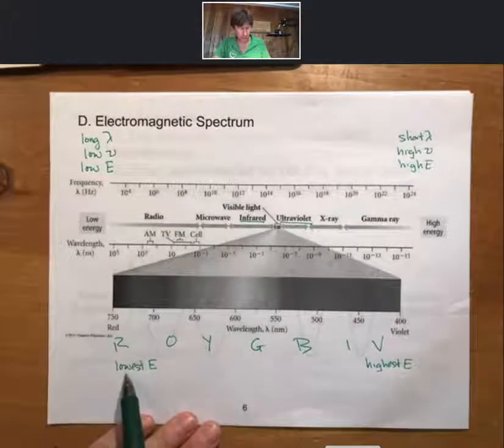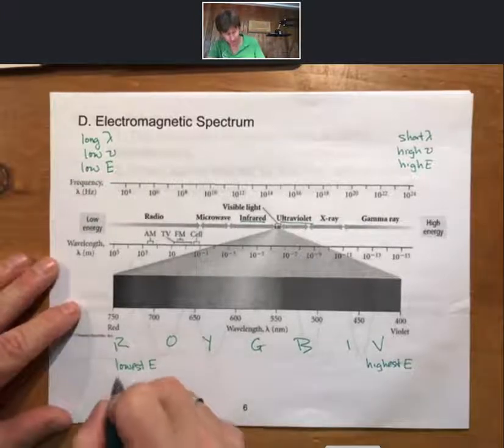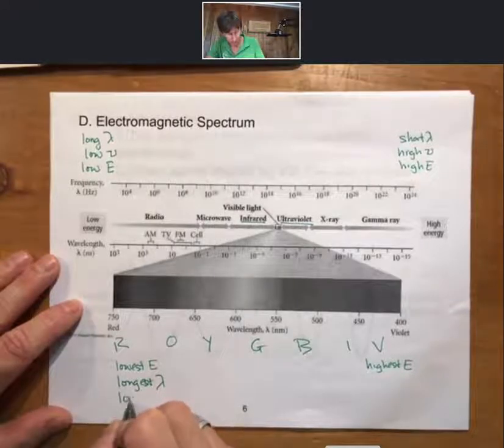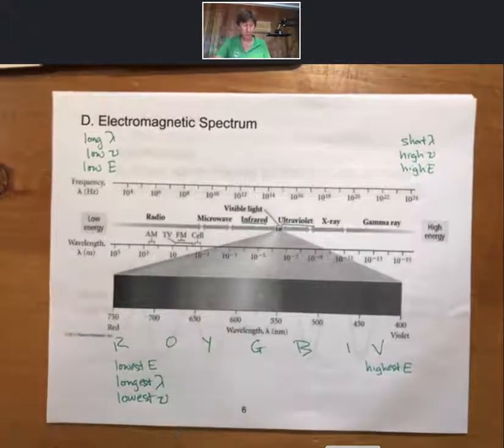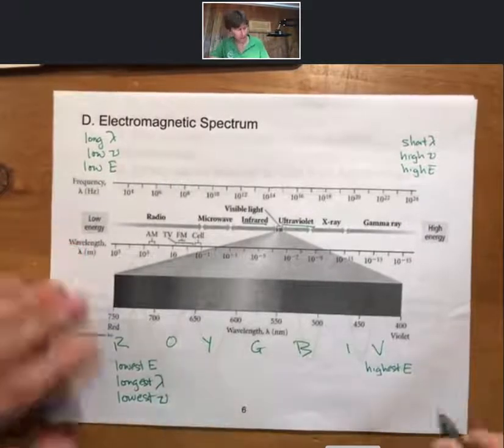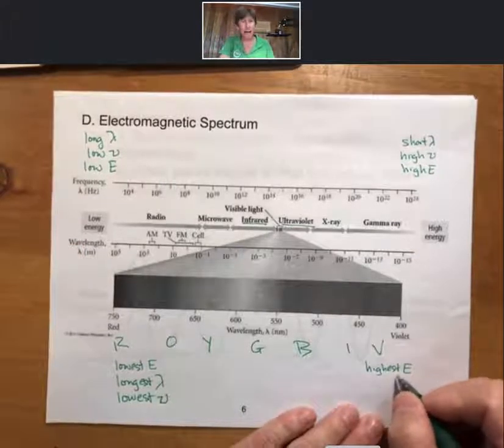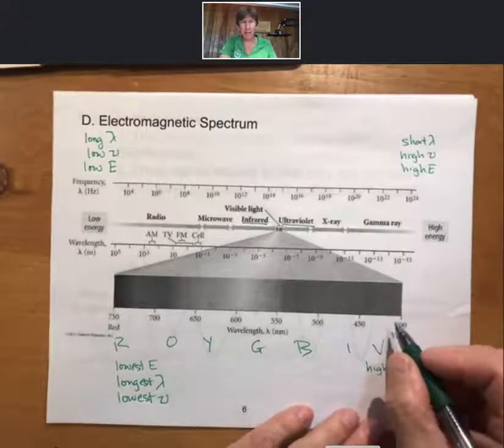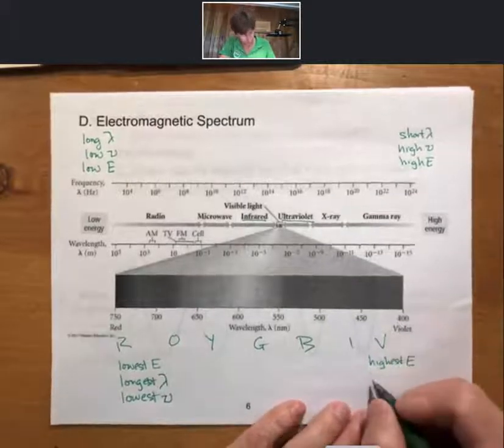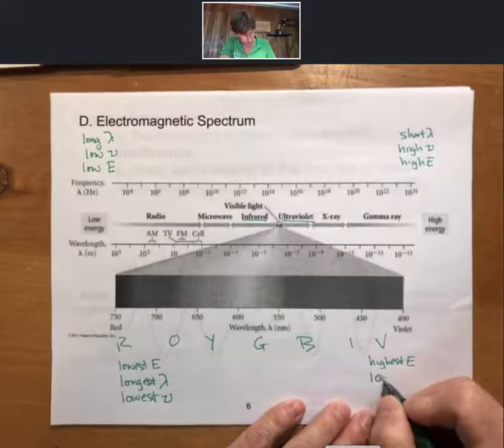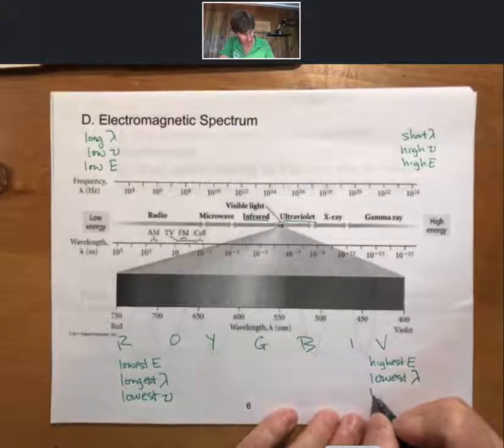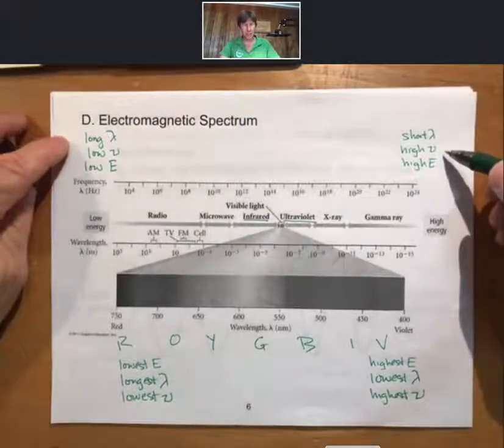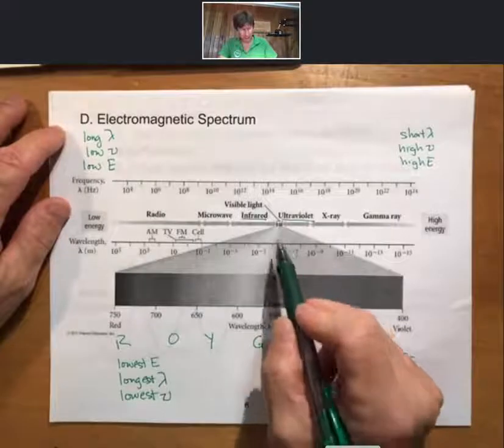Red is the lowest energy. It is also the longest wavelength and the lowest frequency visible color. Within the visible region we also have the highest energy for violet. Online you'll see that this is in color. Highest energy, lowest wavelength, and highest frequency. Those kinds of trends go beyond just the visible region.